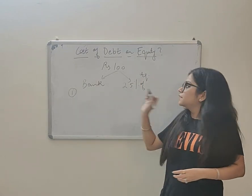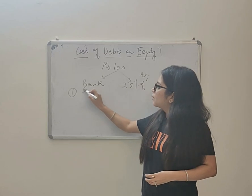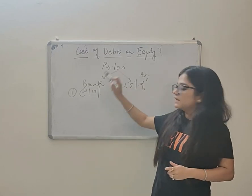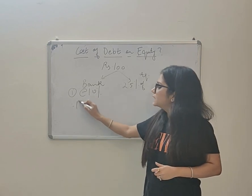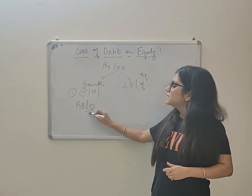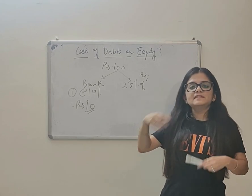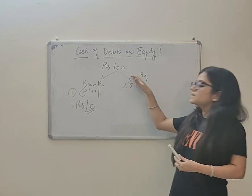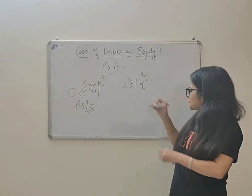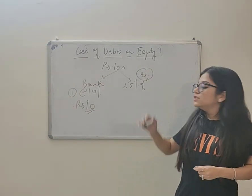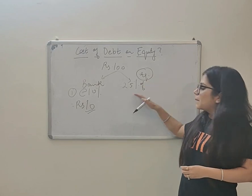In the first case, the company will have to pay interest of 10 percent - 10 percent of 100 is 10 rupees. The company will have to pay a fixed interest of 10 rupees every year. Whereas in the second case, this person becomes an equity shareholder, so the company will have to pay 25 percent of its profit to the equity shareholder.